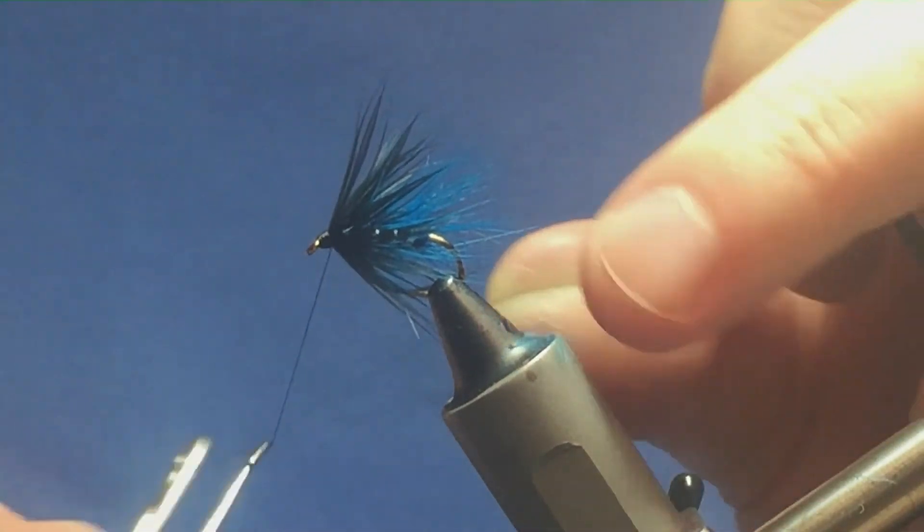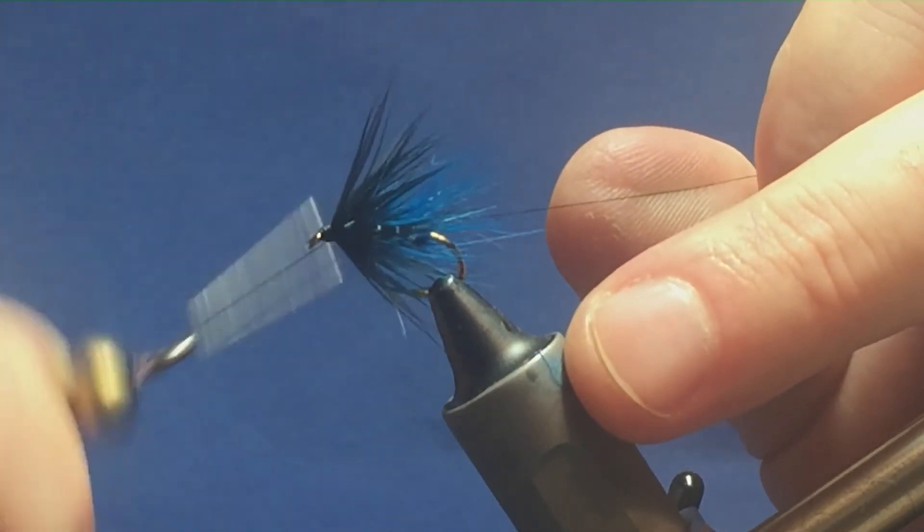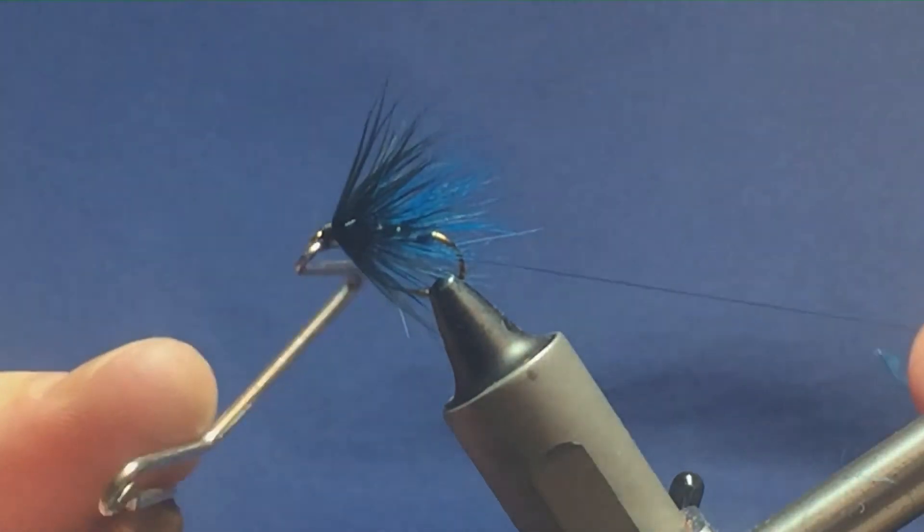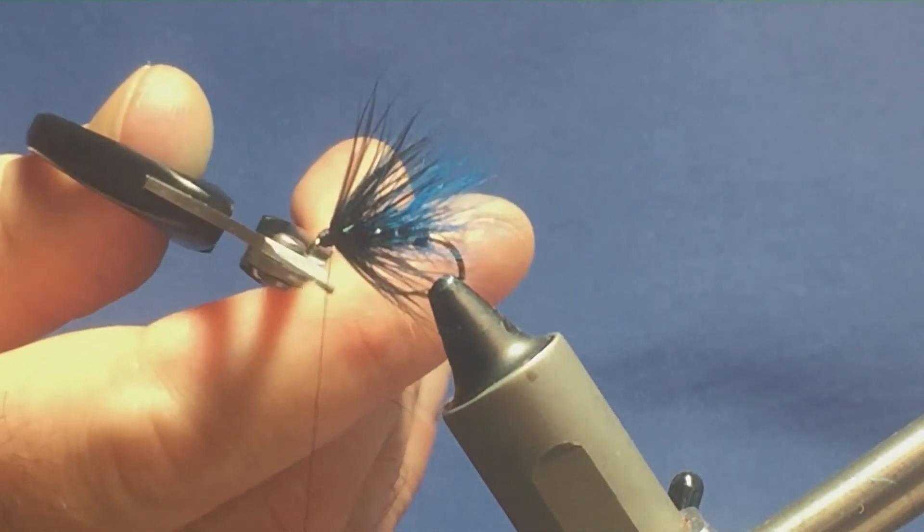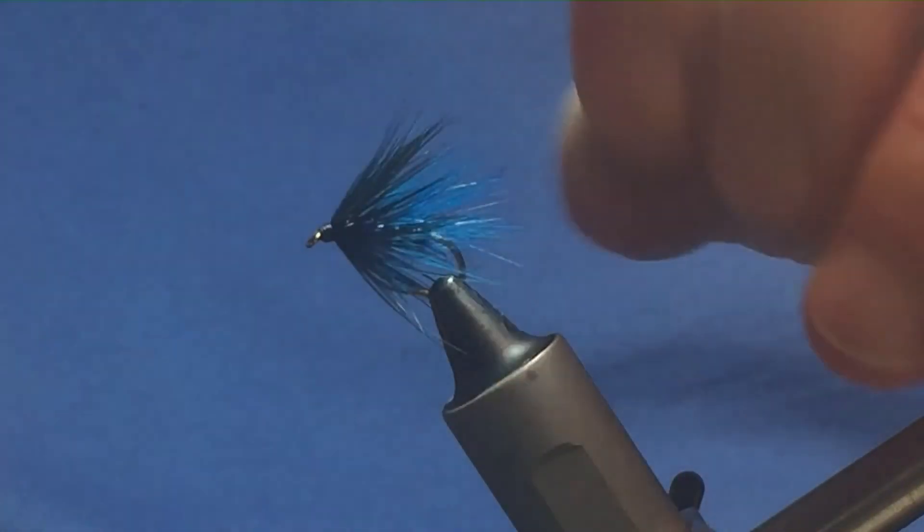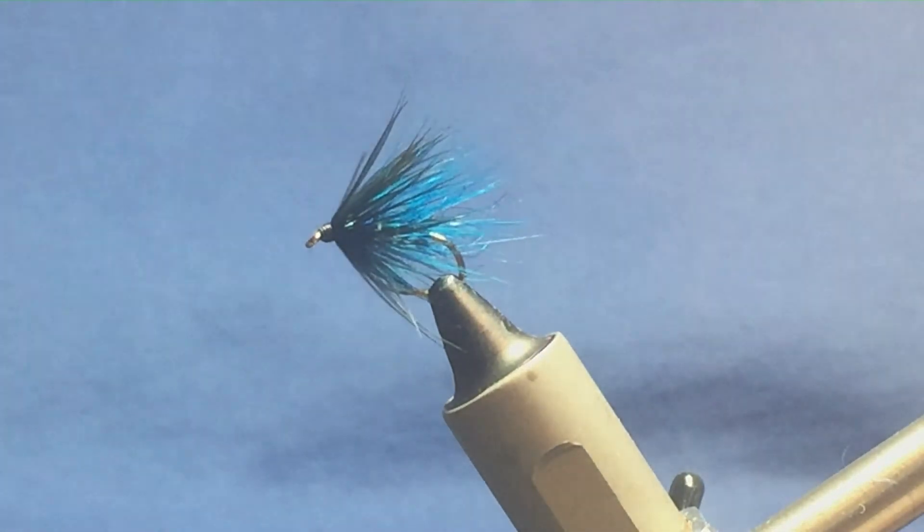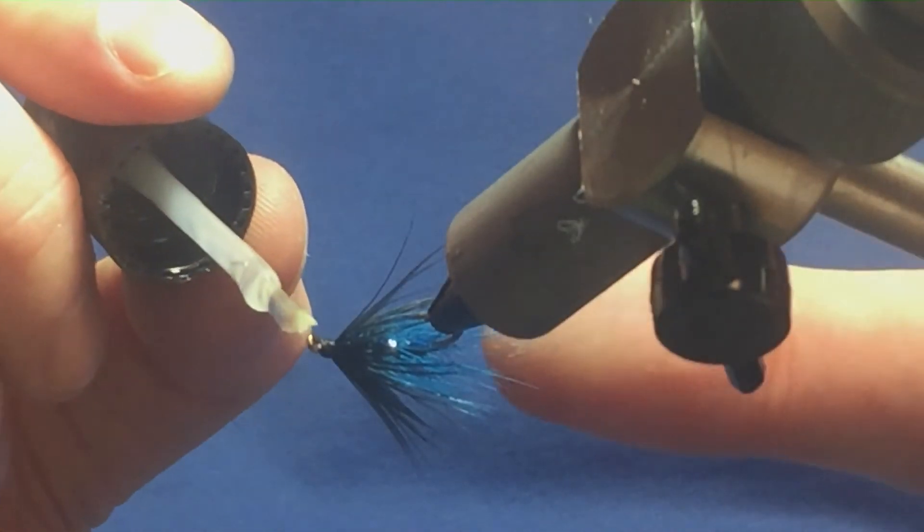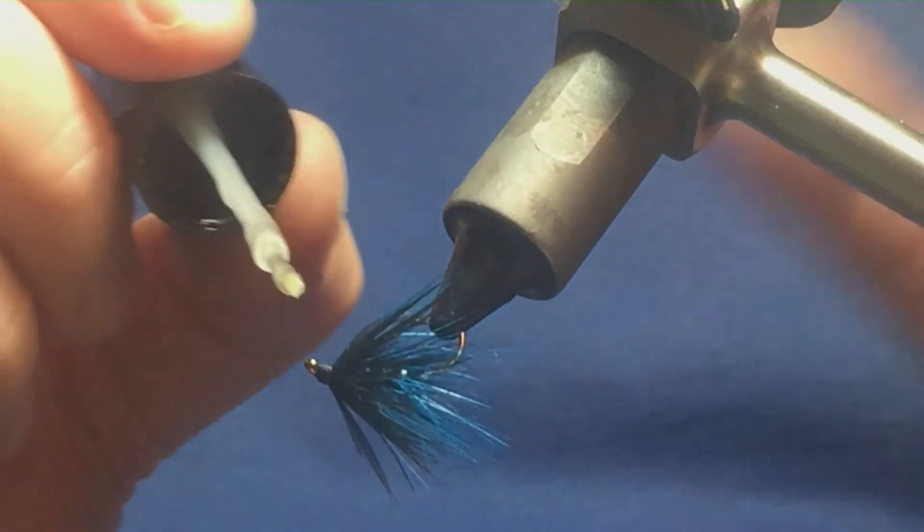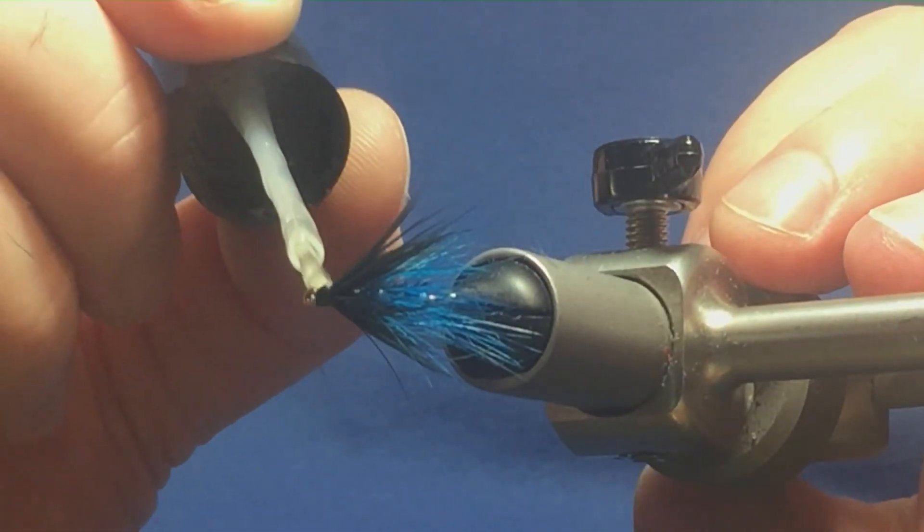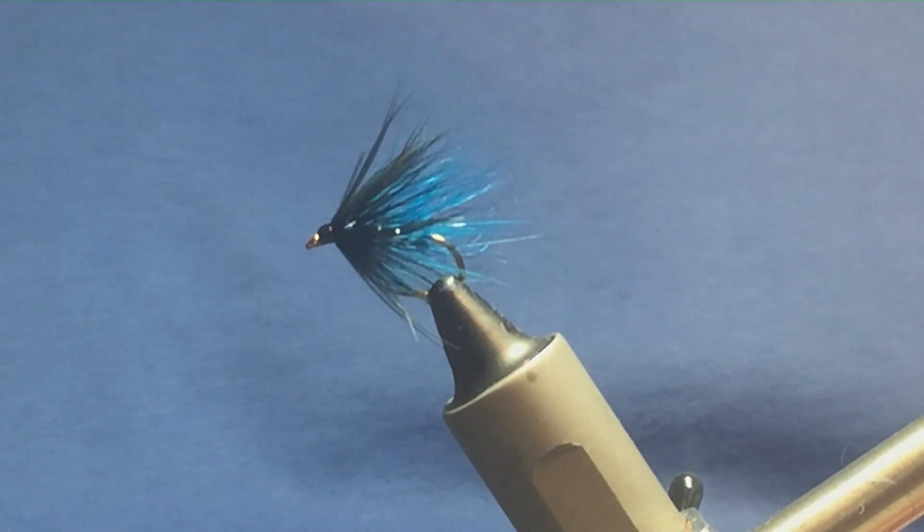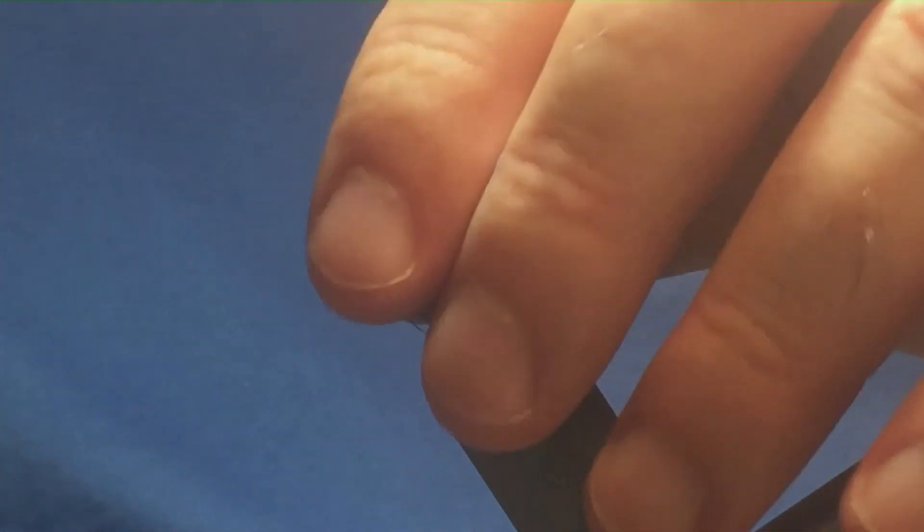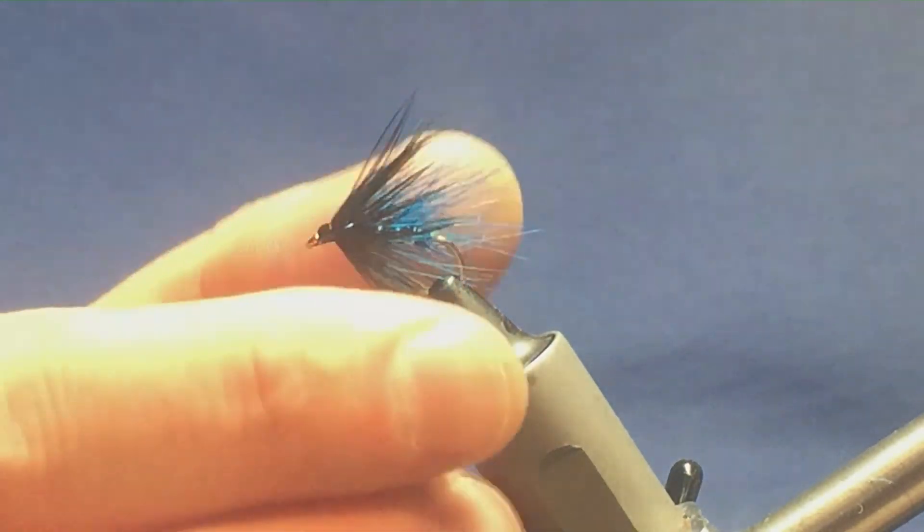And then just trim away the thread. Right, see how we're fixed. Just come in with a wee bit of clear varnish, just on the head. Don't want it on the hackle, just on the head, so just take your time. Now that's just a variant of the Donegal Blue.